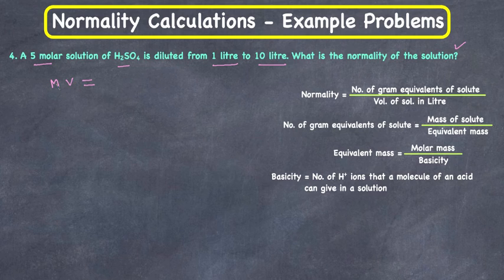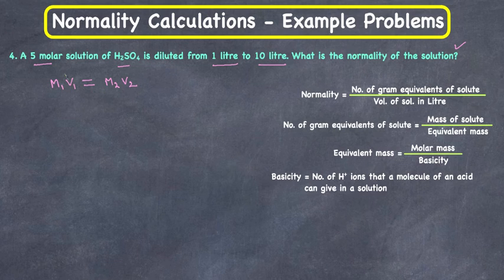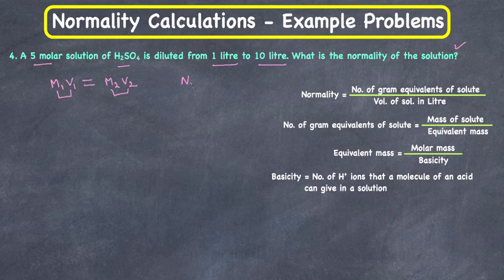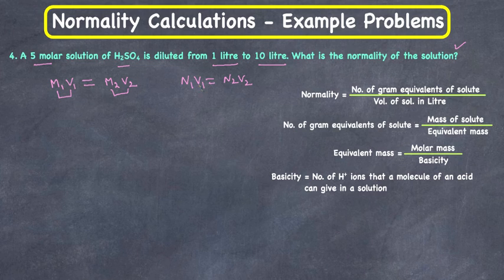The key relationship here is: M₁ × V₁ = M₂ × V₂ — the product of molarity and volume stays constant when a solution is diluted. This rule applies to normality as well: N₁ × V₁ = N₂ × V₂. So we'll first calculate the new molarity, then convert to normality.